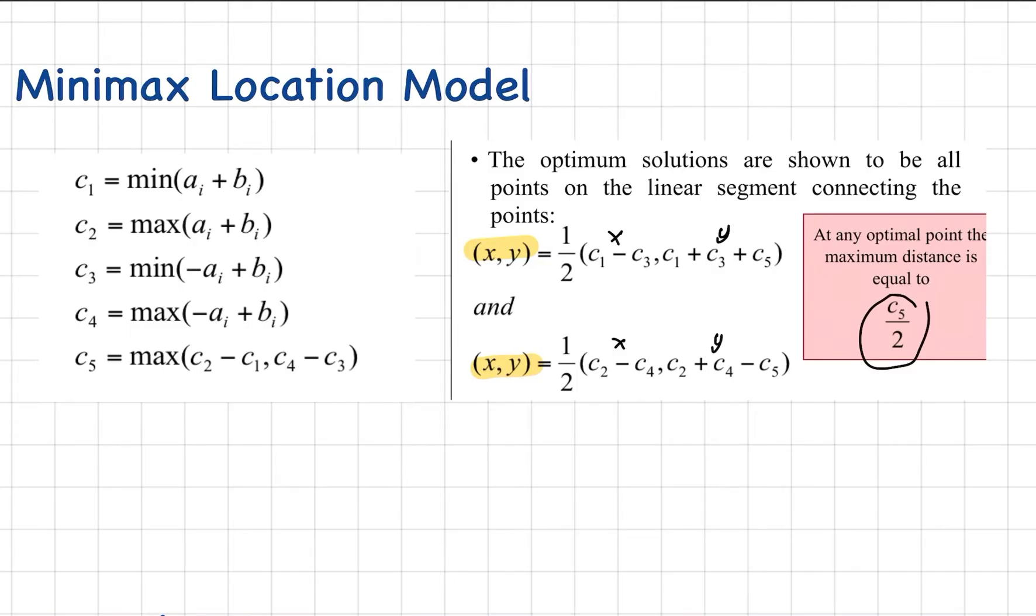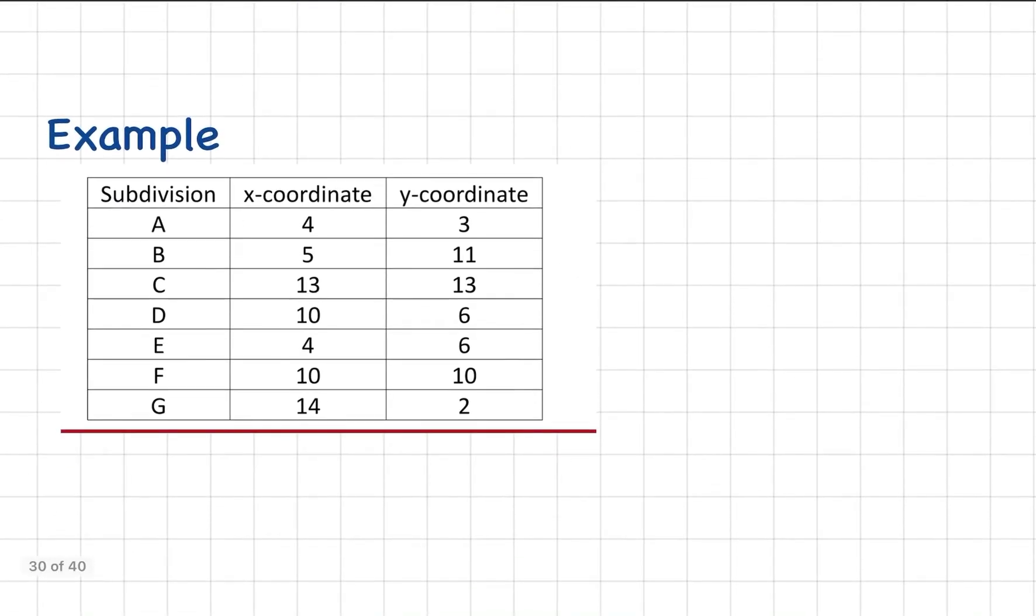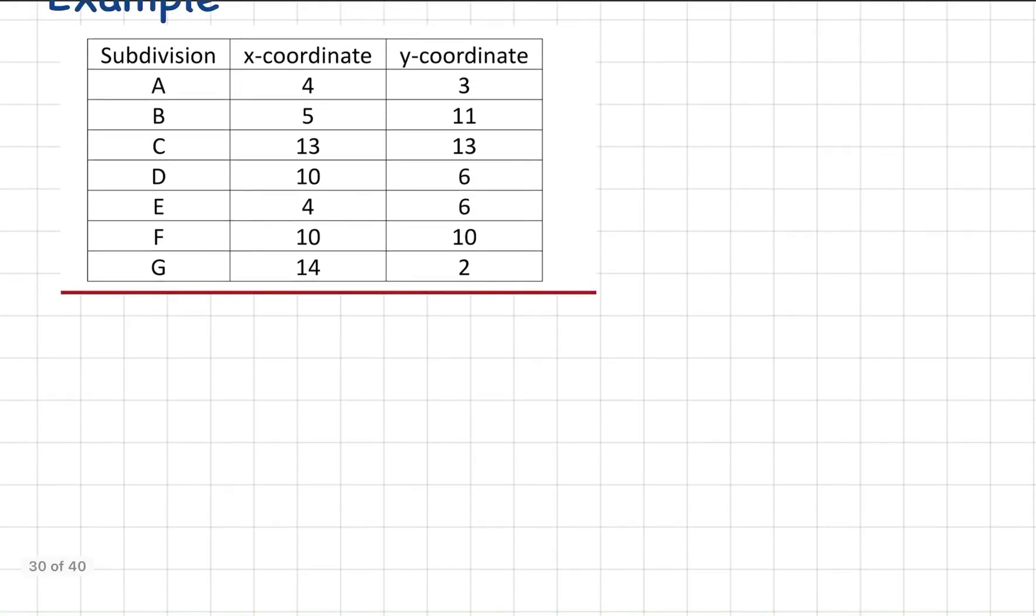The Z is actually used in contours, but we will not be covering the contour anymore for our discussion. We have the following example. We were given the following X and Y coordinate points for subdivisions A to G. To solve for this one, the technique is to write A sub I plus B sub I and then negative A sub I plus B sub I. These are for the subdivisions from A to G. You can rewrite the subdivisions so you won't get confused when you check the sum.